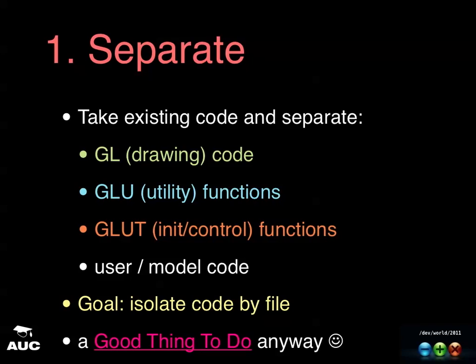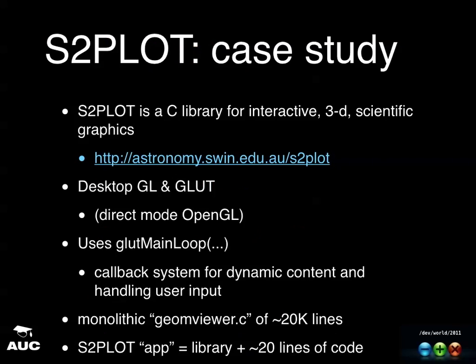So the first step is to take your existing code and separate it out into the GL drawing code, GLU utility functions, init and control code, and user model code. This was the biggest job I had because I had a code base that had accumulated from all sorts of different directions — this is probably what I should have done at the start if I was writing this from scratch with a good software engineering viewpoint.